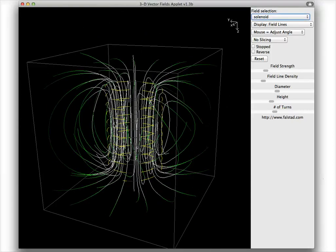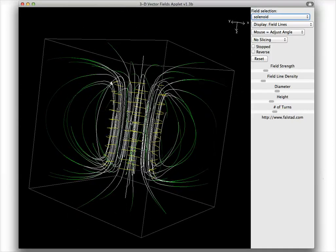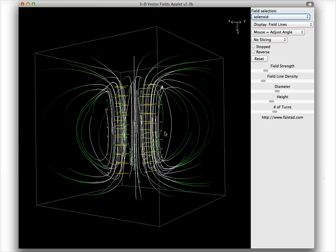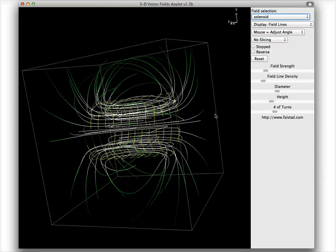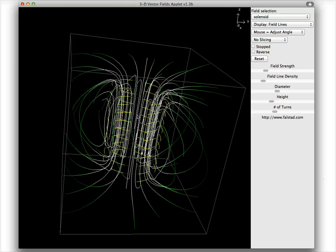So remember this is a solenoid in three dimensions and the really important part I want you to see here is that when it's coming out of the solenoid the field lines aren't straight, they're curved, and you see they're curving away, curving out. That's something I want to emphasize.